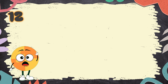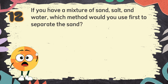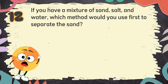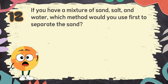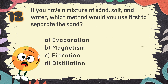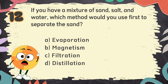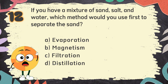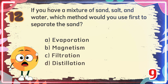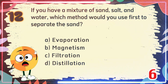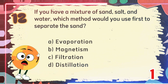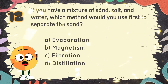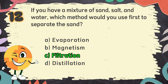Number 12. If you have a mixture of sand, salt, and water, which method would you use first to separate the sand? The choices are: A. Evaporation. B. Magnetism. C. Filtration. D. Distillation. The correct answer is C: Filtration.